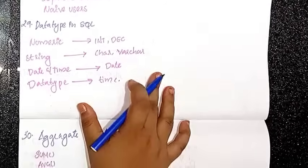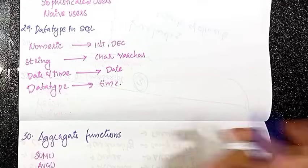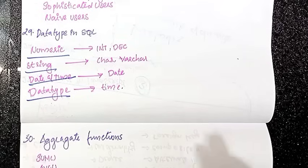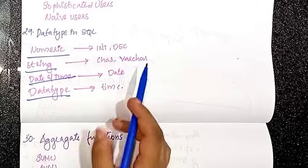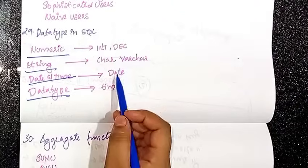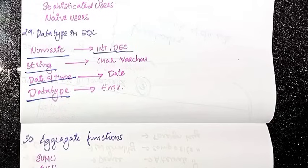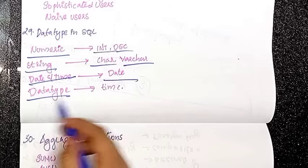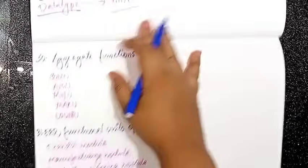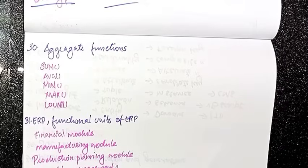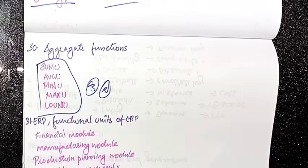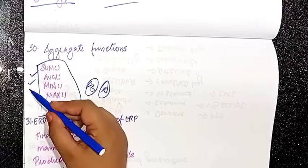The next topic is data types in SQL. The SQL data types include numeric and string data types. Fundamental data types and derived data types. In SQL, numeric data type includes decimal. String data types are varchar and char. Then date and time. Also, aggregate functions — sum, average, minimum, maximum, and count — will be studied separately for 2 or 3 marks.